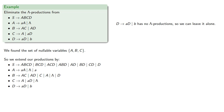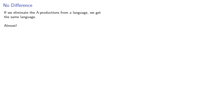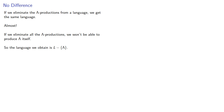D produces A, D, or B has no lambda productions, so we can leave it alone. Now we eliminate all lambda productions and any productions of the form X produces itself. If we eliminate the lambda productions from a language, we get the same language — almost. If we eliminate all lambda productions, we won't be able to produce lambda itself, so the language we produce is actually L minus lambda. We can prove this, but we'll let you do it.